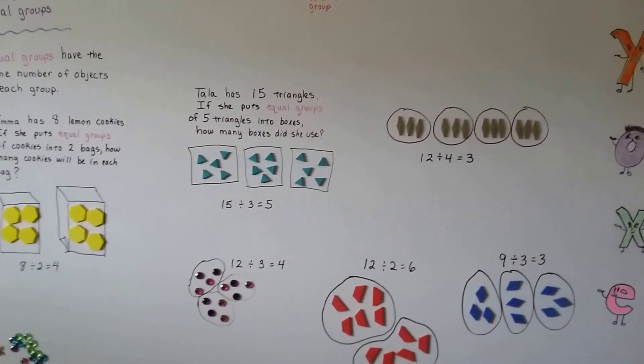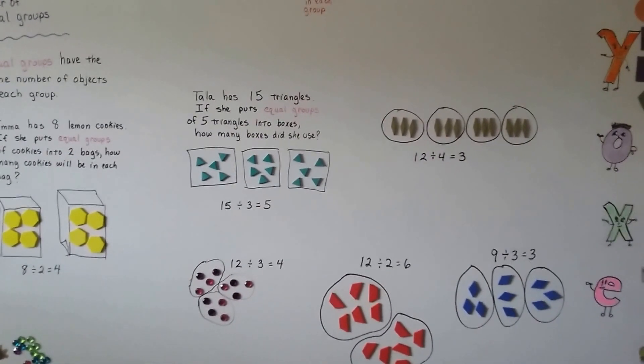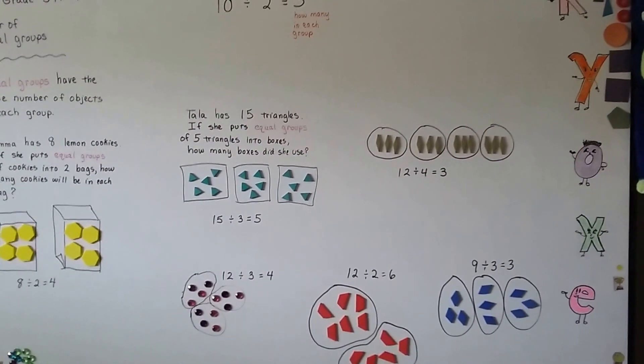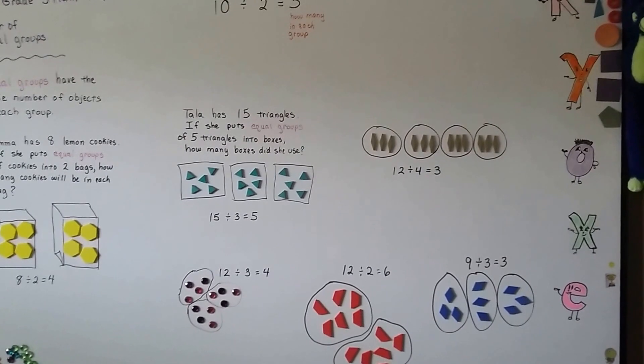So that's how to put numbers into equal groups for division. I'll see you next video. Bye.